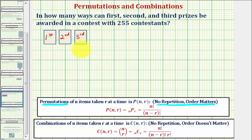The product of the number of these ways will tell us how many ways all three prizes can be awarded. For the first place prize, it could be awarded to any of the contestants, so there's 255 ways to select the winner of the first prize.